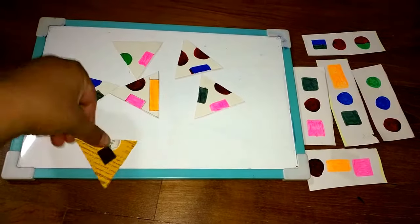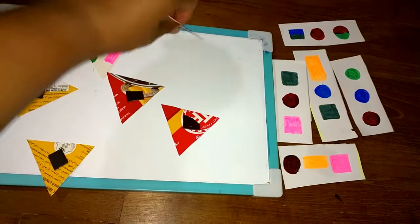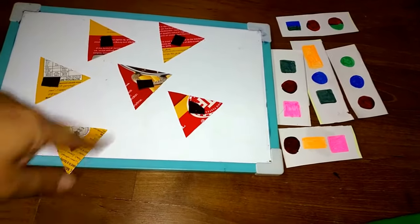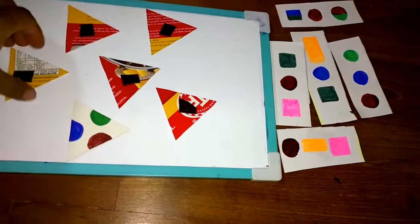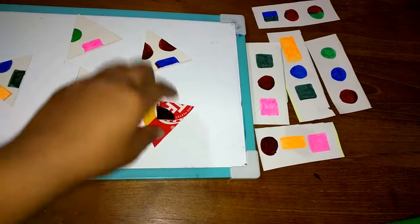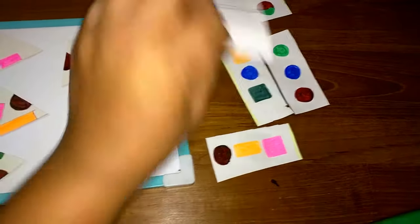I just took some boxes - an empty box - and cut them into triangles. All are equilateral triangles. Then I added magnets to them so I can play on the magnetic board. These are simple cards which I made on paper.